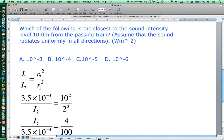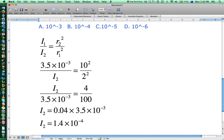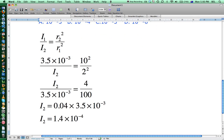Intensity 2 is what we've been asked to find, and the radius that that's at is 10 meters, so we get 10 squared there. Just turning that upside down to transpose it a bit more easily, we get I2 equals 0.04 times 3.5×10^-3.